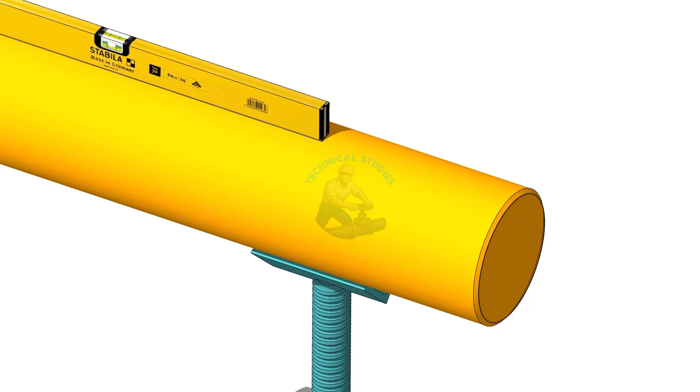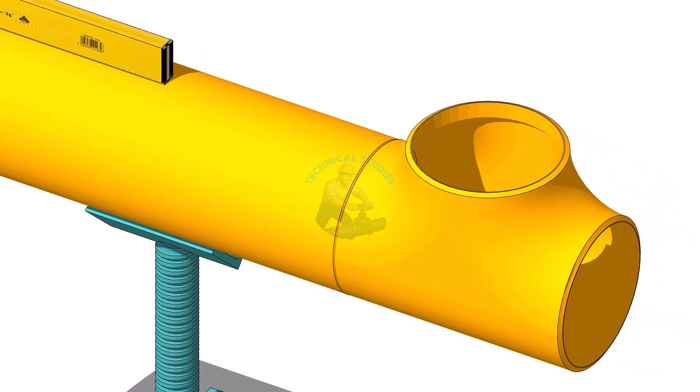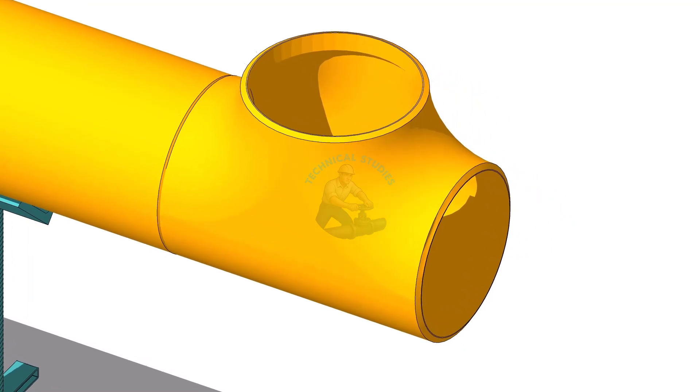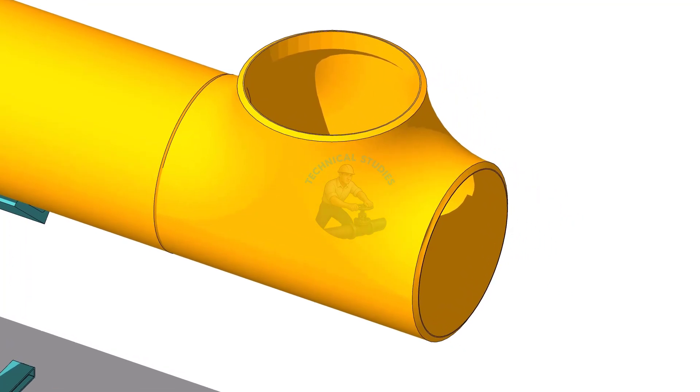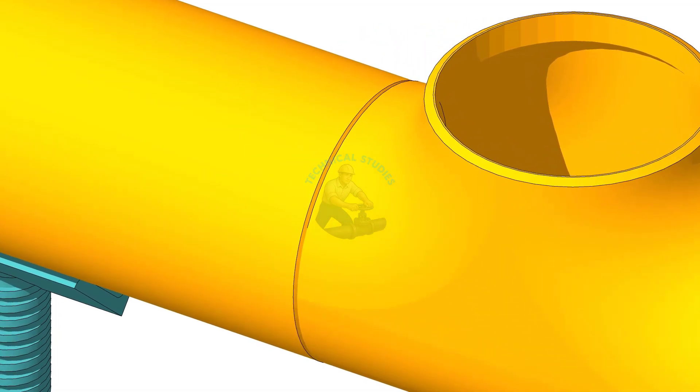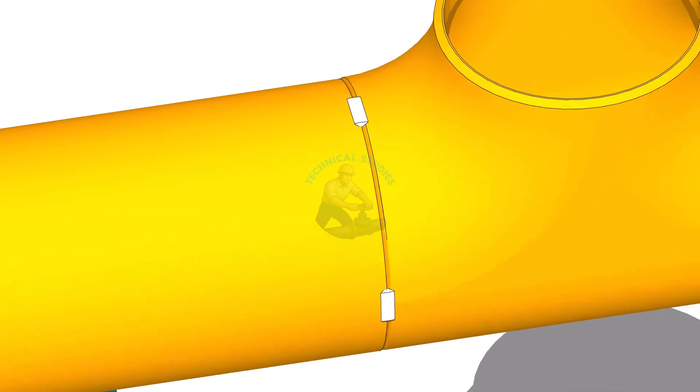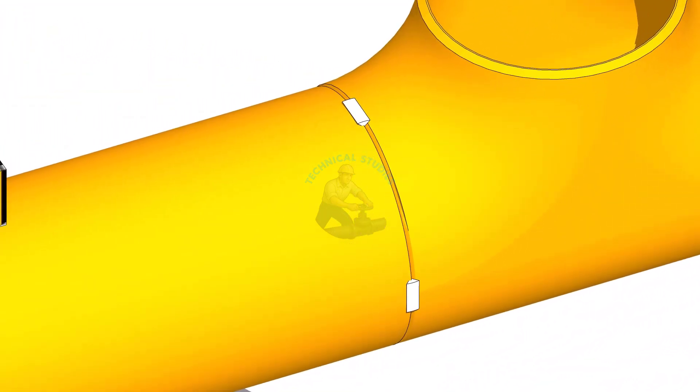Level the pipe. Tack weld the tee on the pipe as shown. Level the tee in both directions.